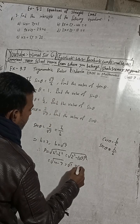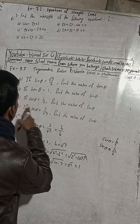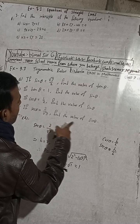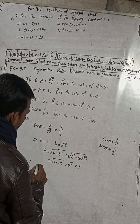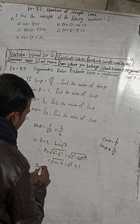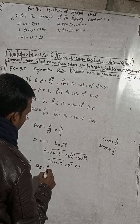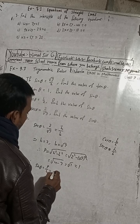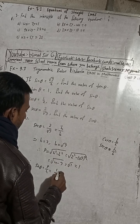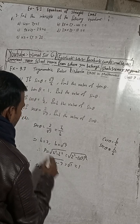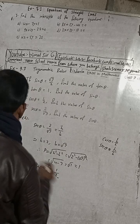So P equals 1 and H equals 2. Now find sin θ. Therefore sin θ equals P by H, where P equals 1 and H equals 2. So sin θ equals 1 by 2.